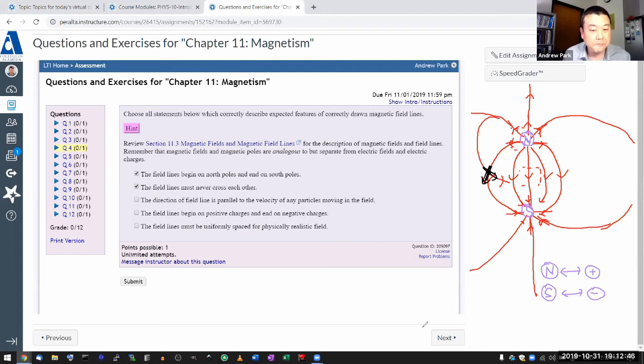The field lines begin on positive charges and end on negative charges. Well, electric fields do, but magnetic fields are not electric fields. So magnetic field lines don't begin or end on electric charges.